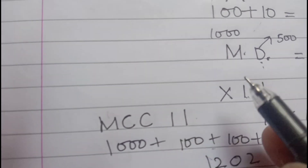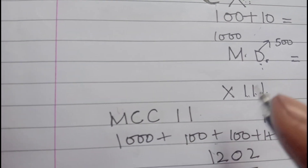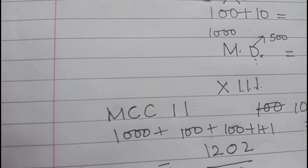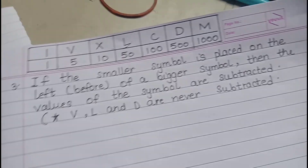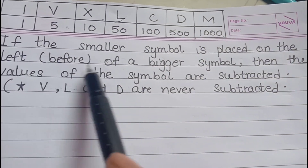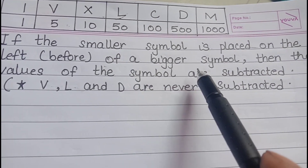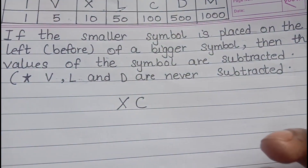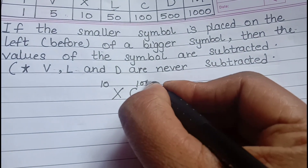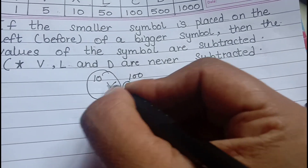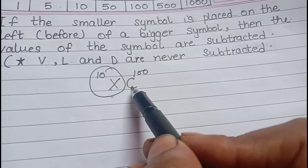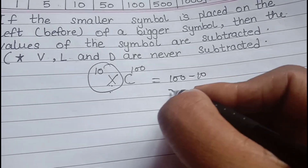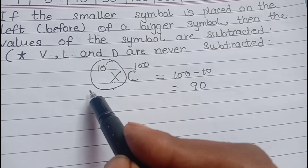For subtraction, you can only subtract one number at a time. Rule 2: If the smaller symbol is placed on the left side of a bigger symbol, the values are subtracted. For example, XC — X is 10 and C is 100, so the smaller symbol X is on the left, which means 100 minus 10 equals 90. We can write only one symbol on the left side.